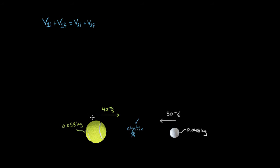Let's say object one is the tennis ball and object two is the golf ball. So the initial velocity of the tennis ball is positive 40 — I'll write positive just so I know that's to the right. Plus the final velocity of the tennis ball, I'll write that as VT final, so I know which object's velocity I'm talking about. VT final means final velocity of the tennis ball.